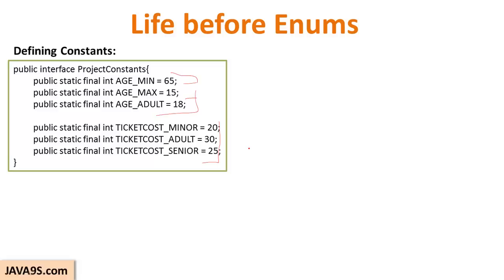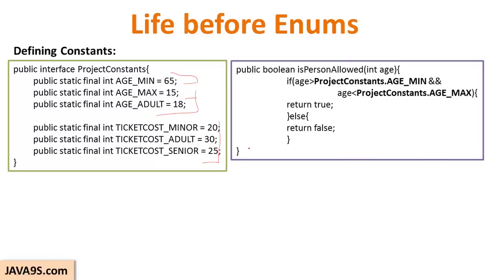If you start using these constants in a program, you might compare an age which is an integer with another age constant. There is always a good possibility that somebody can use the wrong constant in that place. The compiler or virtual machine does not really check what type of constant is being used — it only cares that an integer is used, leading to misuse of constants with no enforcement of which constant should really be used.